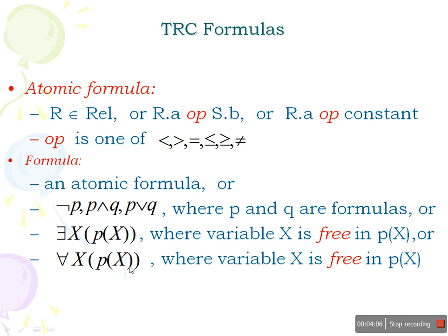Apart from atomic formulas, we have additional notations to include in the formula: negation of p, p and q, p or q — where p and q are formulas. We can also use quantifiers: there exists, and for all. Using these, we can write complete formulas in relational calculus.